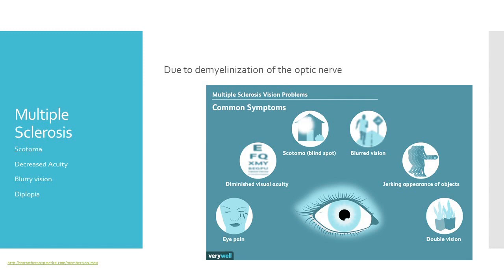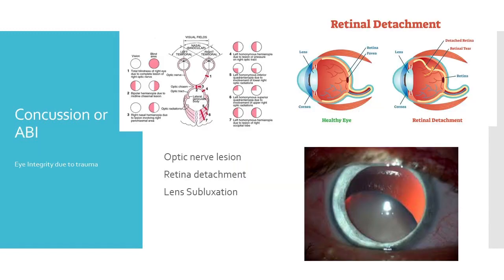In terms of function, we're looking at difficulty with such things as reading, driving, scanning in your kitchen or bedroom for clothing, or even just picking out an outfit. Things that can happen after a concussion or an acquired brain injury include issues with eye integrity — like optic nerve lesions anywhere along the path from your eye to your occipital lobe. You can also have a retinal detachment, so you want to ask if they are having any flashes of light and get them to an eye care professional as soon as possible. And you can also have what's known as a lens subluxation, where the lens actually shifts and moves down the front of the eyeball. This may not be as obvious as it is in this picture, so complaints may be a lot of blurry vision.